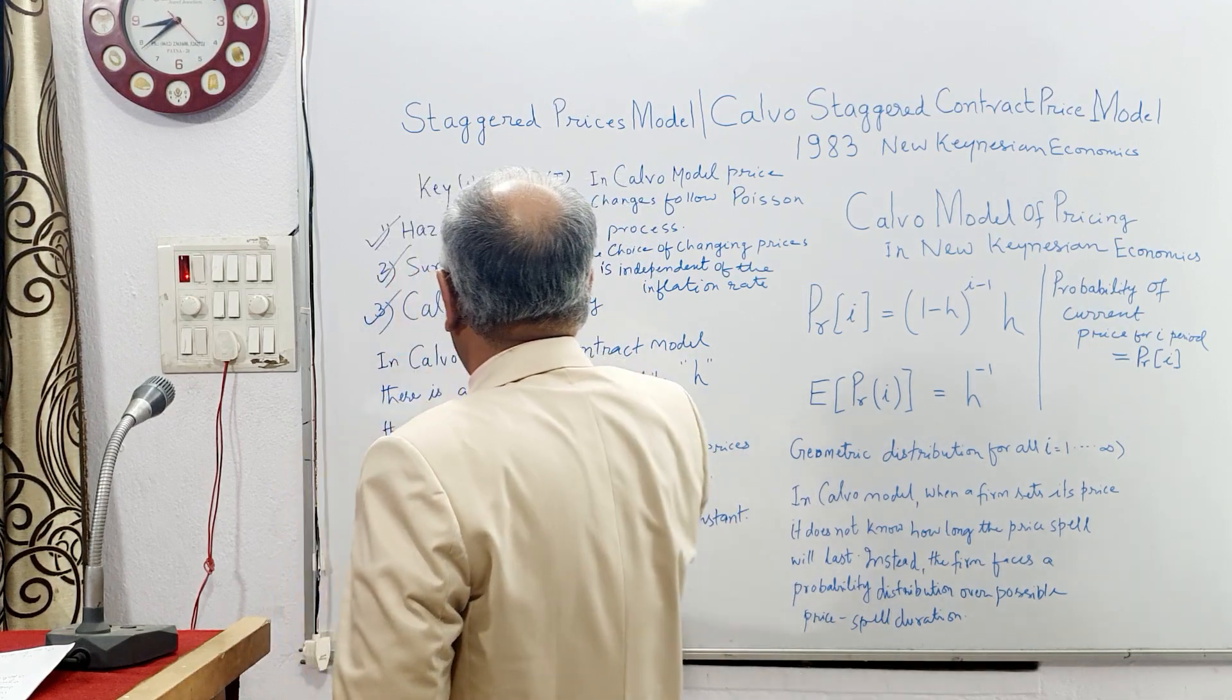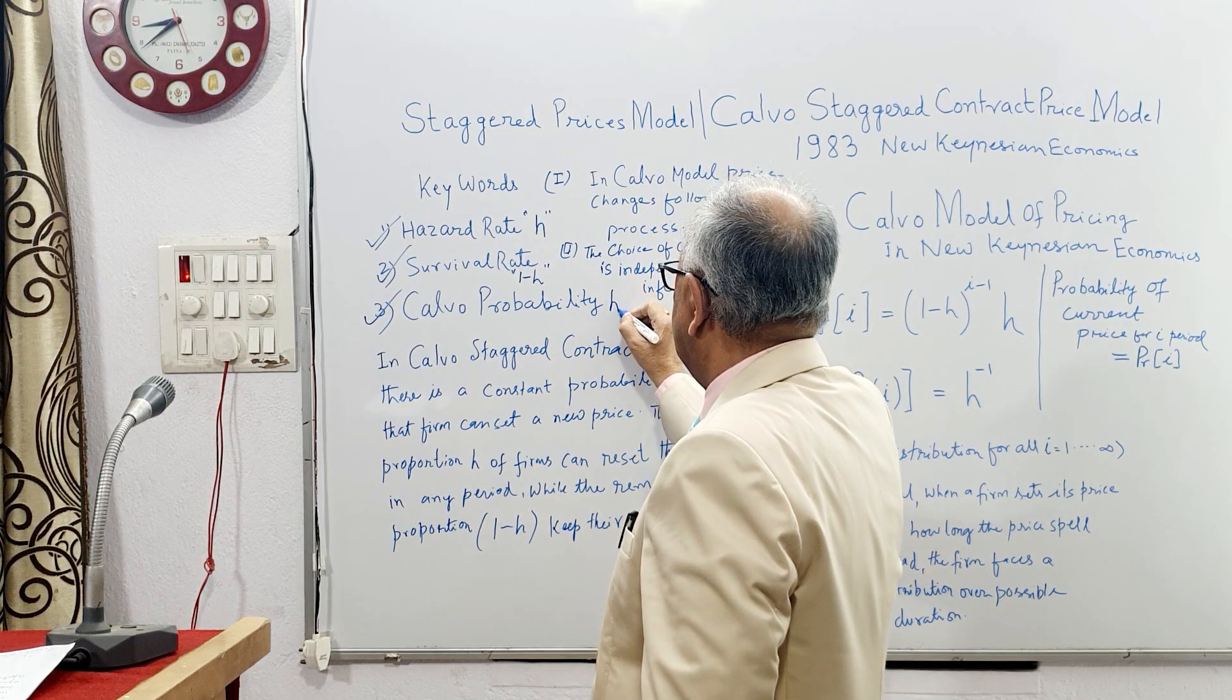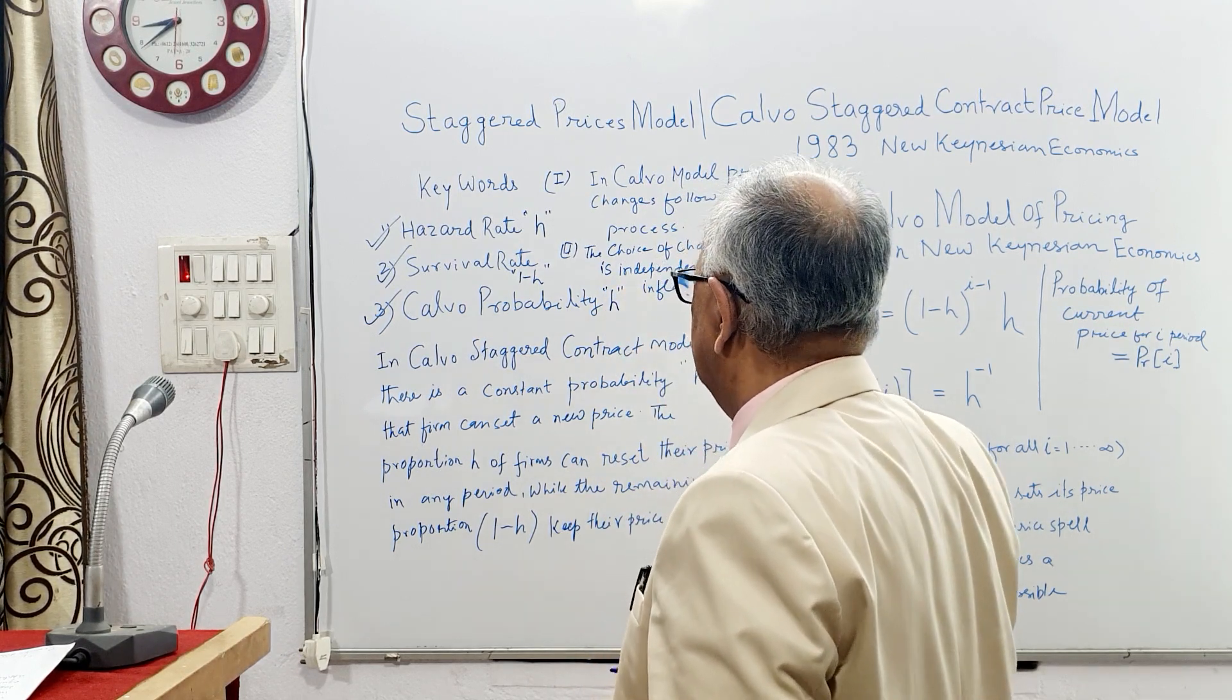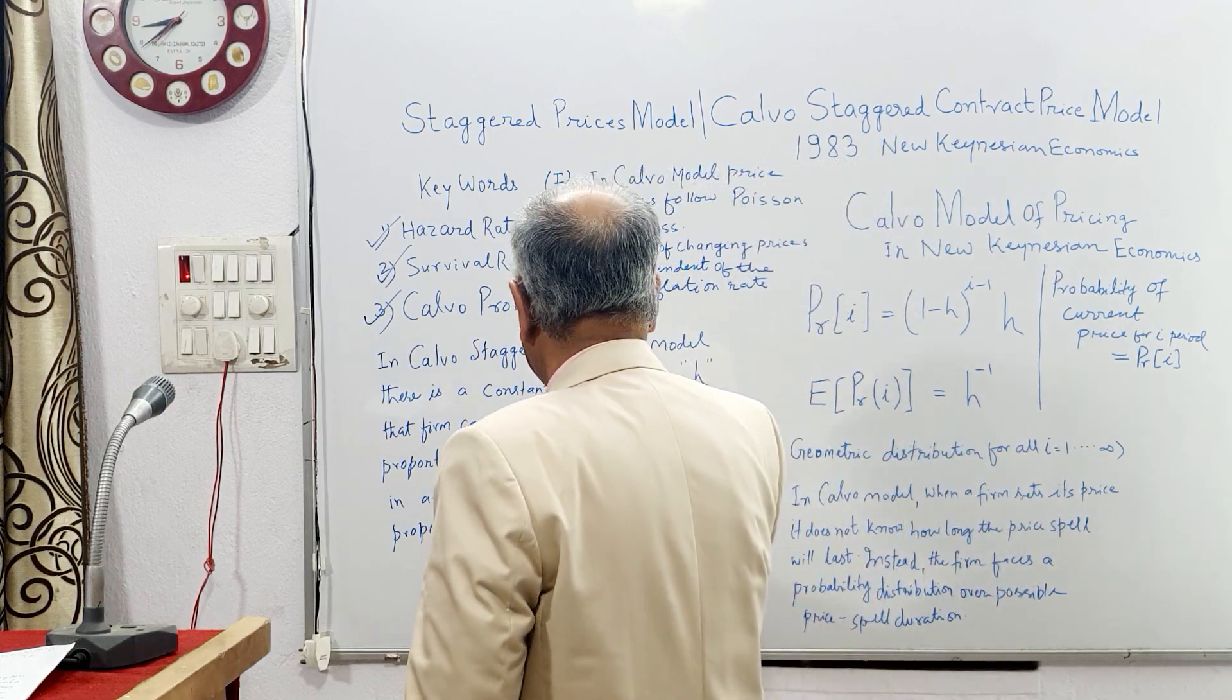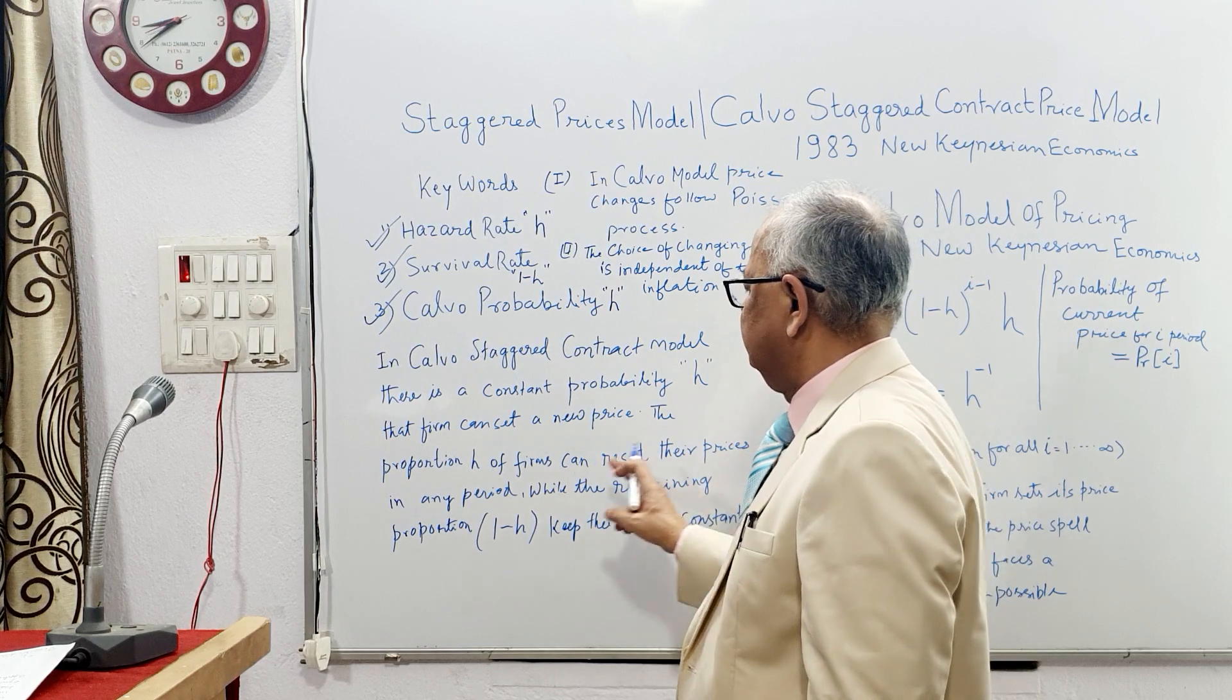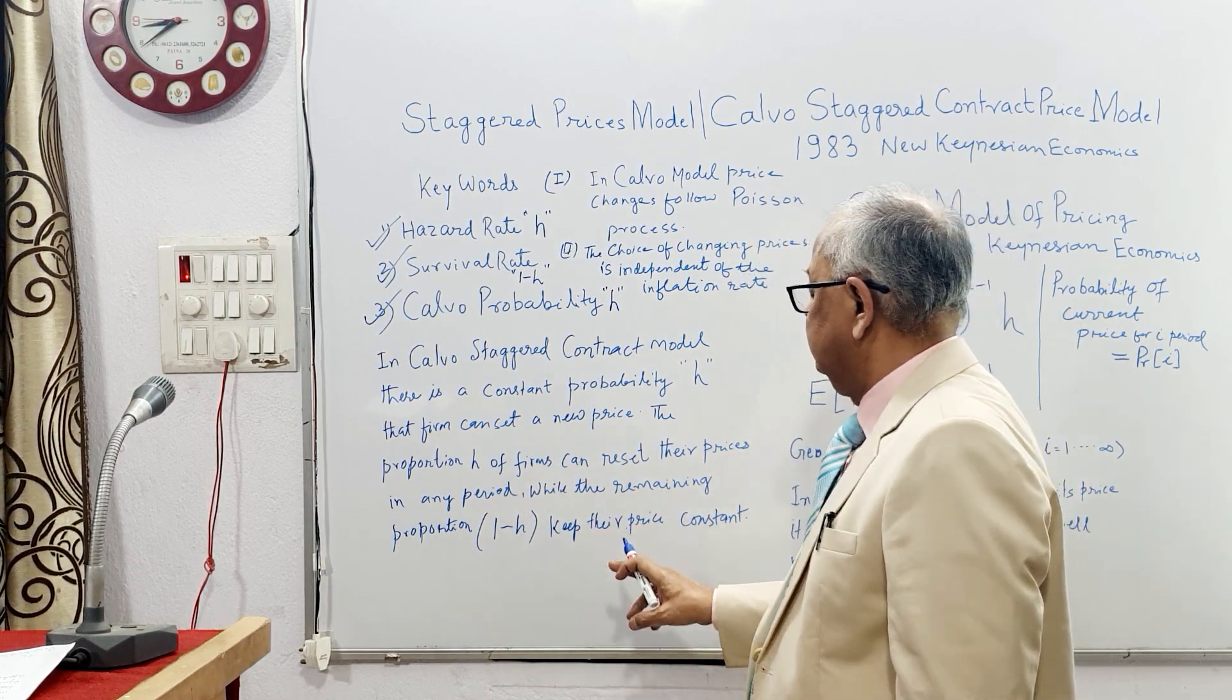Calvo probability is nothing but h. In Calvo's staggered contract model, there's a constant probability h that a firm can set a new price. The proportion of firms can reset their prices in any period, while the remaining portion (1 minus h) keep their prices constant.